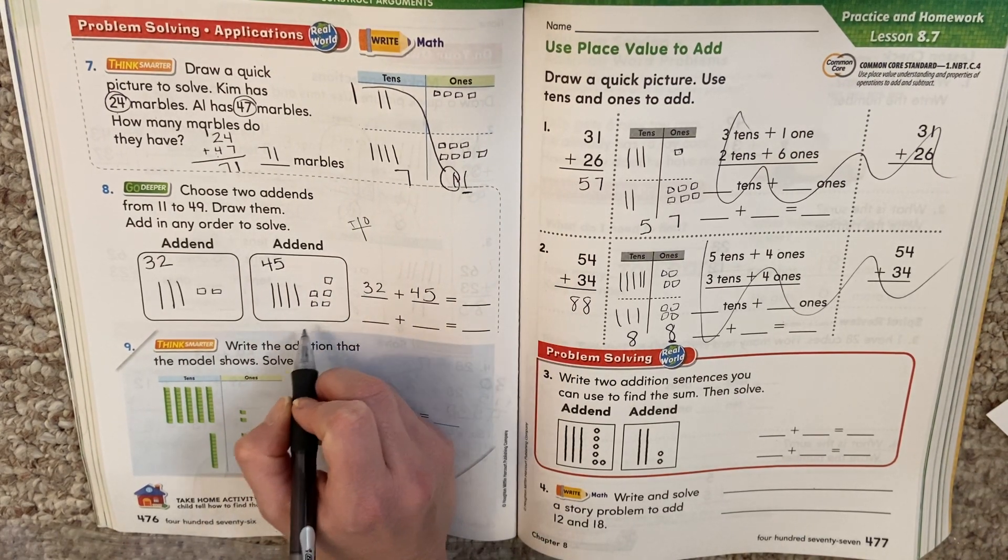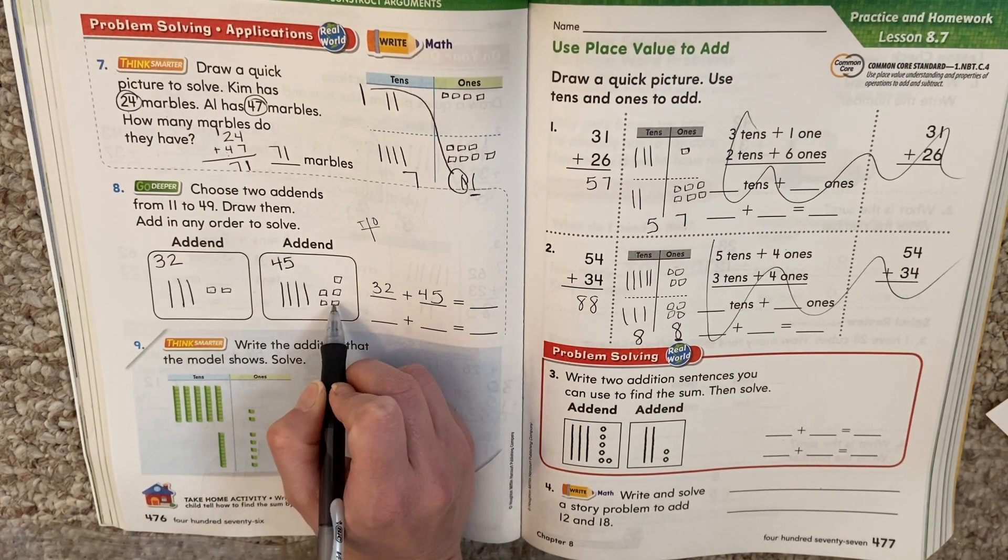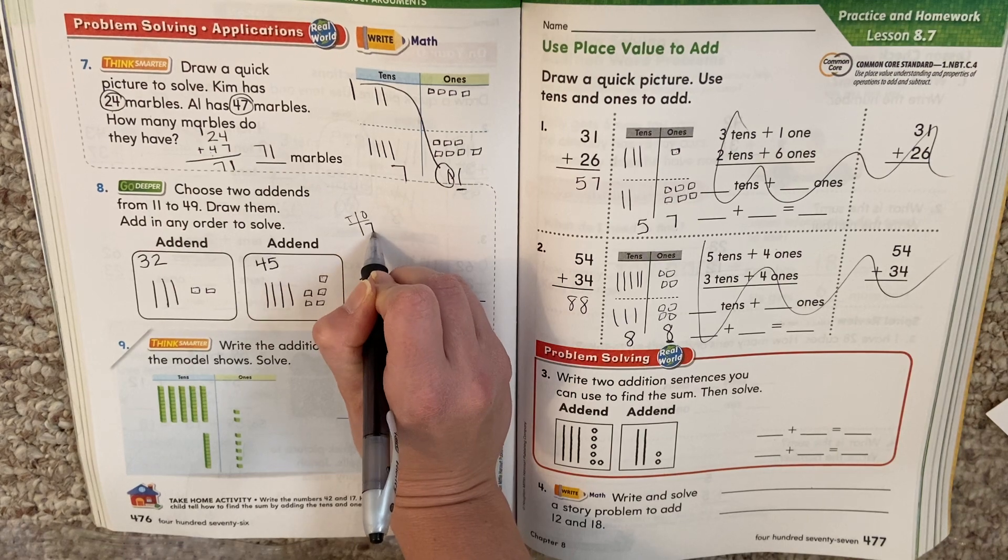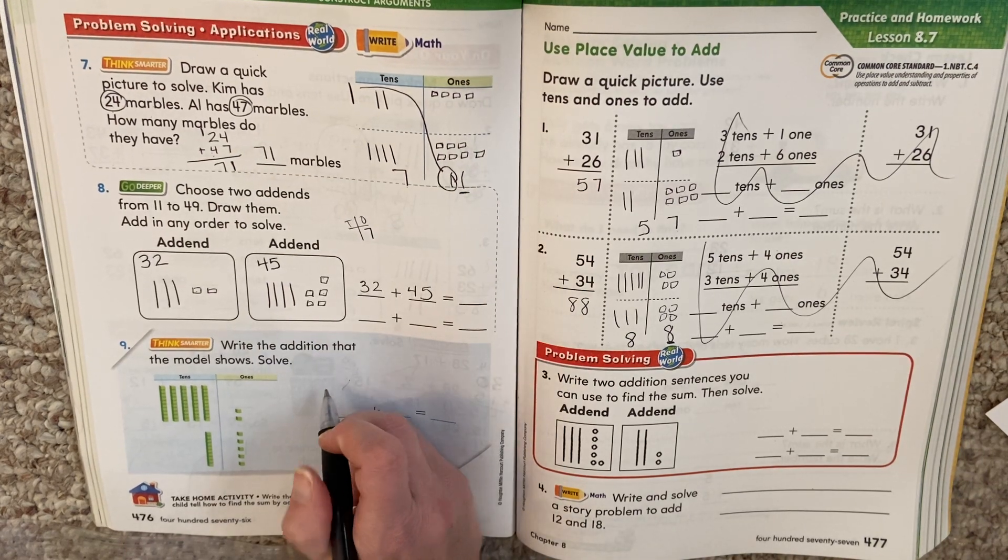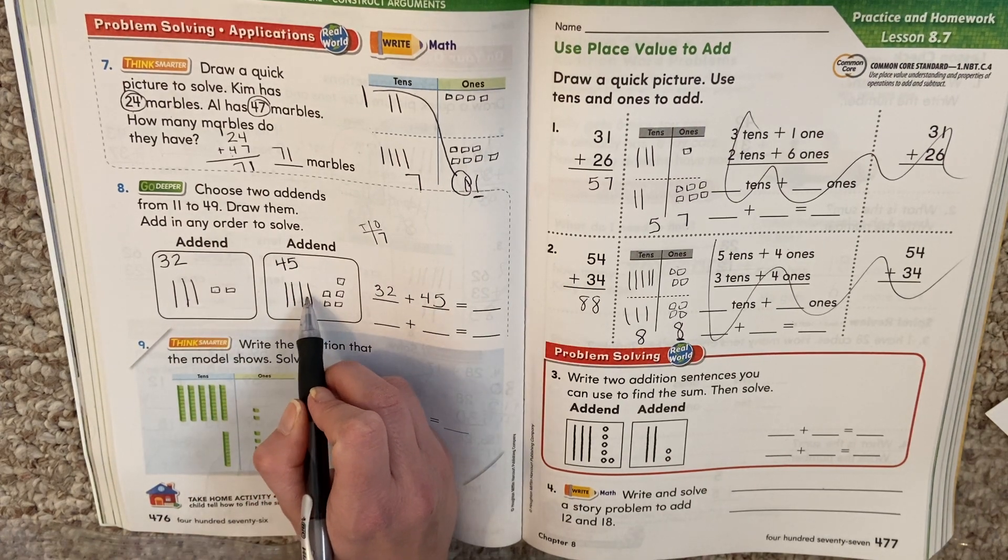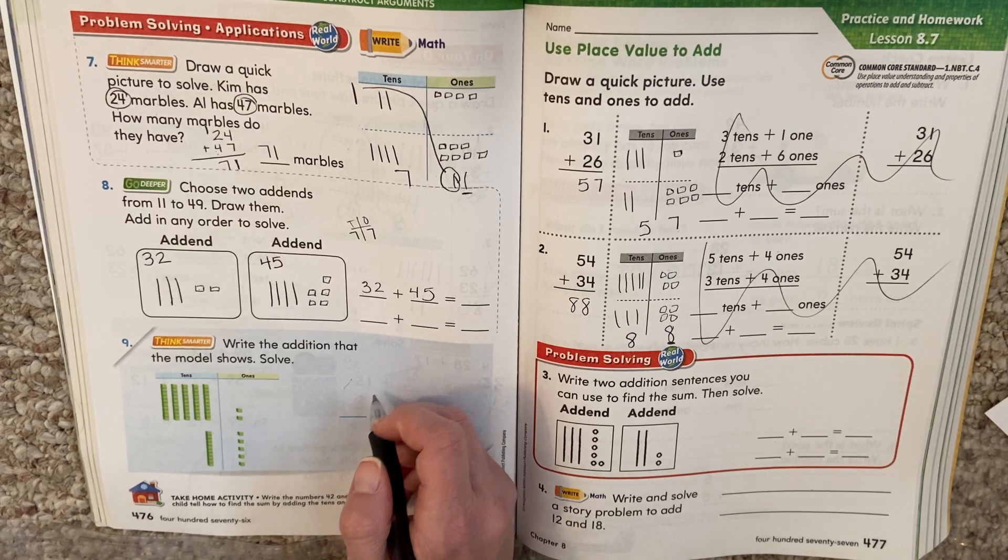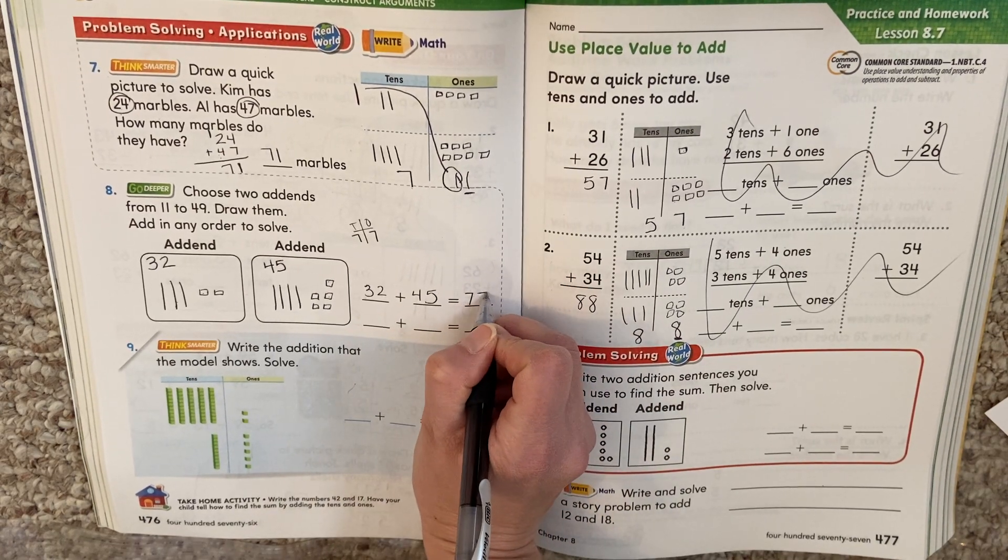How many ones do I have? One, two, three, four, five, six, seven. Seven ones. How many tens do I have? One, two, three, four, five, six, seven. Seven tens. So how much did I have? Seventy-seven.